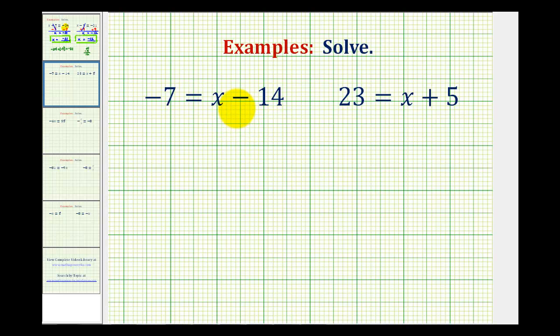Looking at these two examples, notice how the variable is on the right side, which sometimes can be a little bit strange, but it really doesn't matter which side of the equation we isolate the variable on. For these, we'll isolate the variable on the right side.